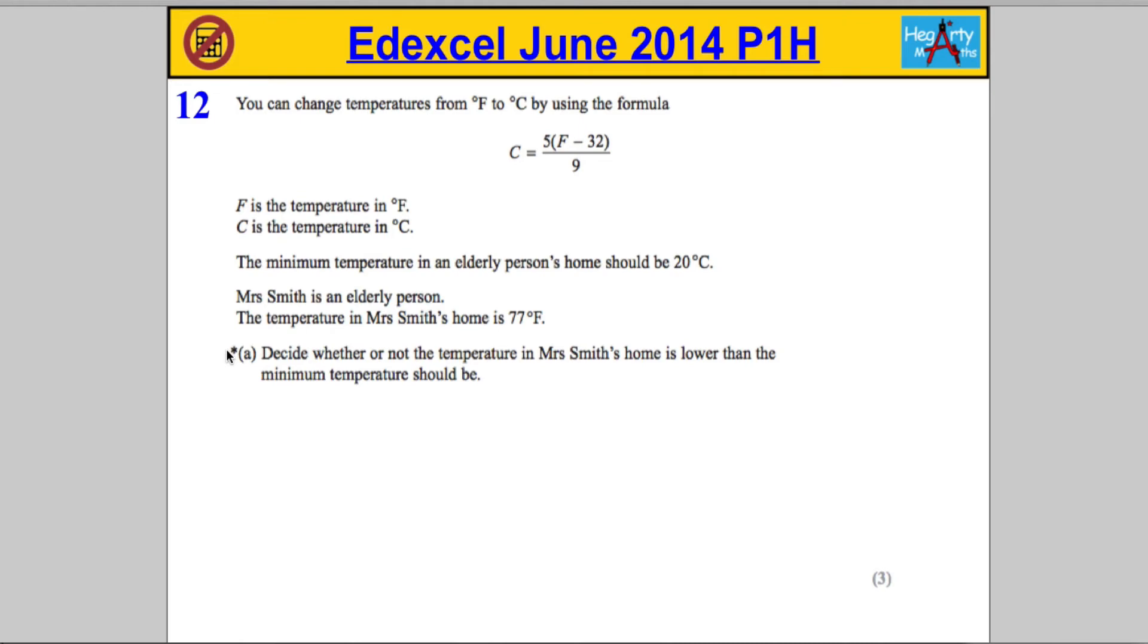Question 12 says you can change temperature from degrees Fahrenheit to degrees Celsius by using the formula. It tells us that F is the temperature in Fahrenheit and C is the temperature in Celsius. The minimum temperature in an elderly person's home should be 20 degrees Celsius. Mrs. Smith is an elderly person. The temperature in Mrs. Smith's home is 77 degrees Fahrenheit.